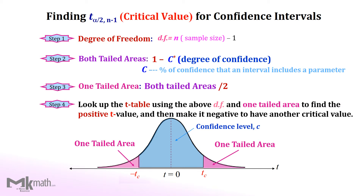Please keep in mind that our t-table gives only positive t-scores. However, we should have both positive and negative critical t-values.